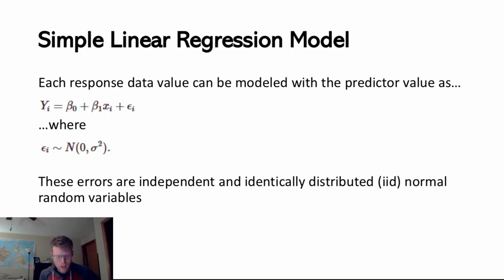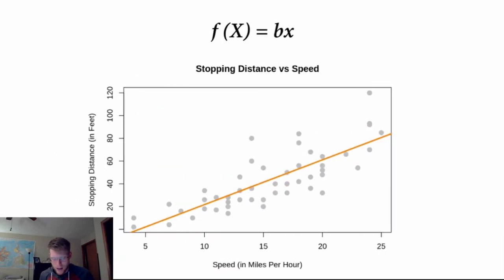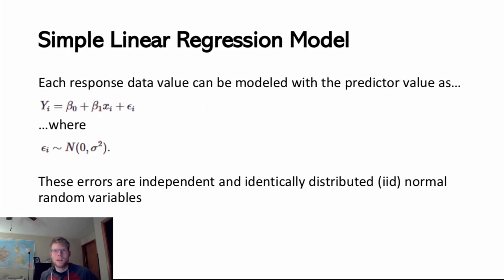I can model the position of any point in the response using this equation plus some epsilon — some amount of error — where that error is going to follow a normal distribution with mean 0 and variance sigma squared. One of the assumptions of the linear regression model is that it has constant variance across the range. If we're assuming this is truly a linear relationship, the error should be equal — the same amount of variance at one end as at the other end of the x range.